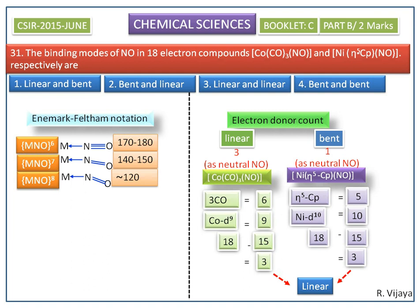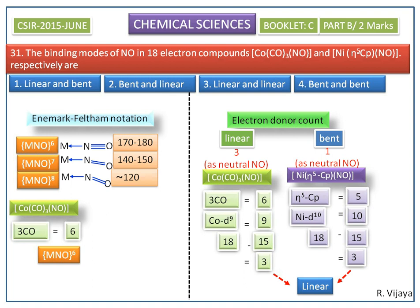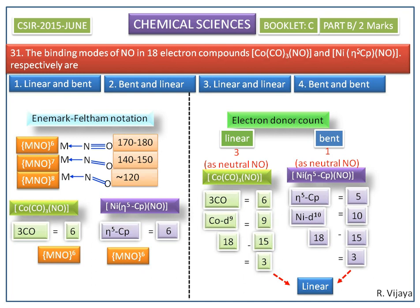Now we do the electron count using the ionic method. For the first complex, three carbonyls donate six electrons, so we represent it as {M(NO)}^6. For the second complex, cyclopentadienyl is an innocent ligand and donates six electrons in the ionic method, so we also represent it as {M(NO)}^6. Both complexes have the {M(NO)}^6 representation, meaning both have a linear structure with a 170 to 180 degree angle.